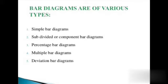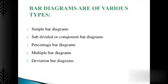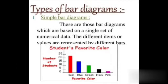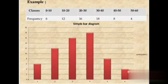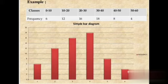So starting with simple bar diagrams. These are those bar diagrams which are based on a single set of numerical data. The different items or values are represented by different bars of different colors. I am giving you one example to make you understand. You can see the classes were given and their frequencies were given. You must have made these in class 10 also.